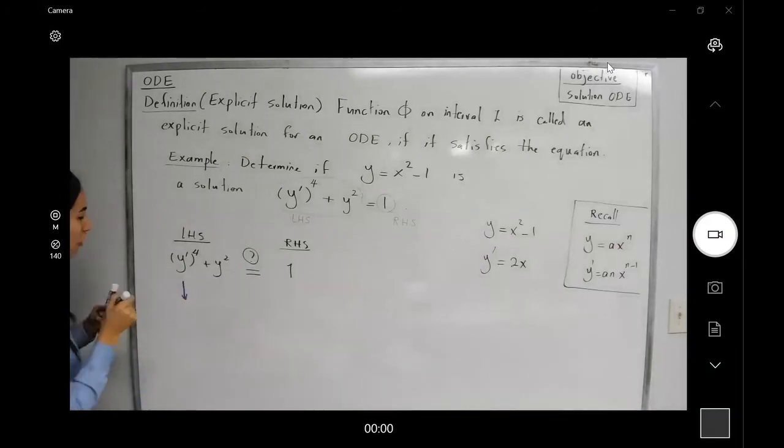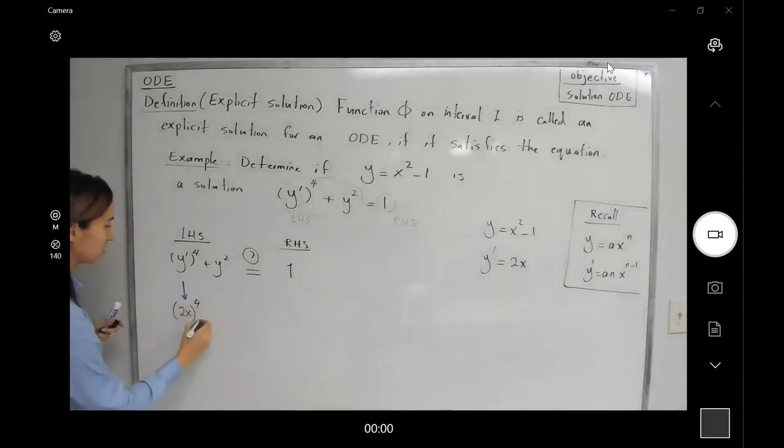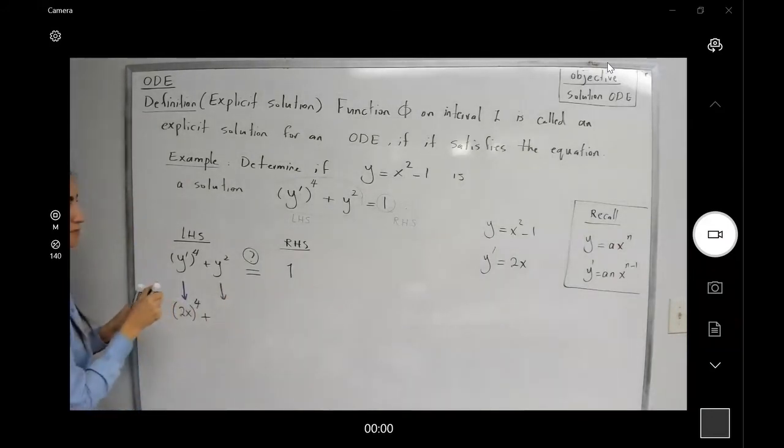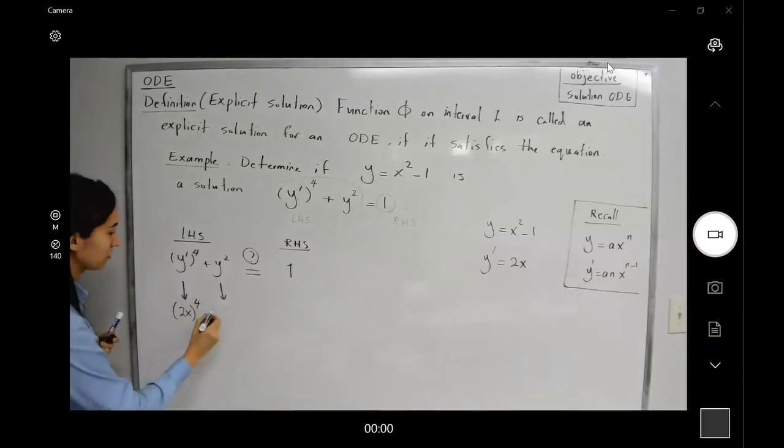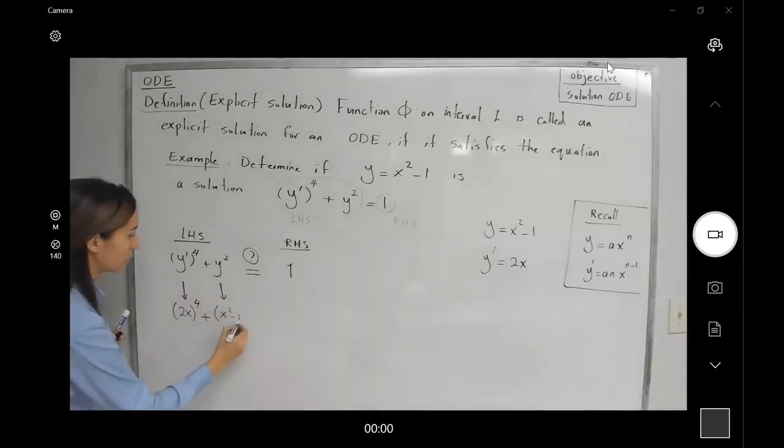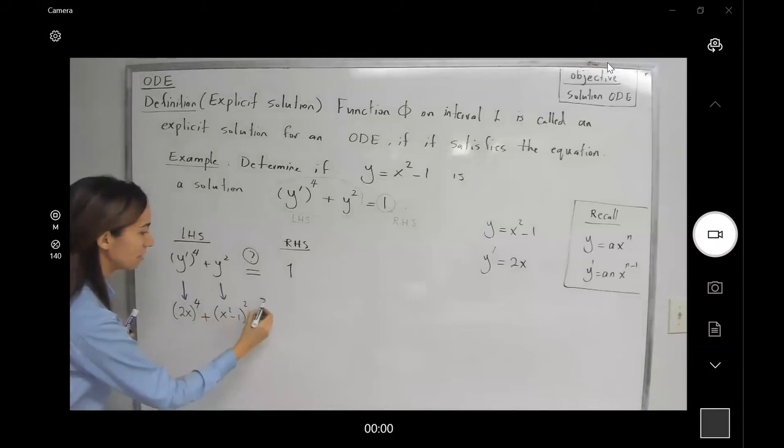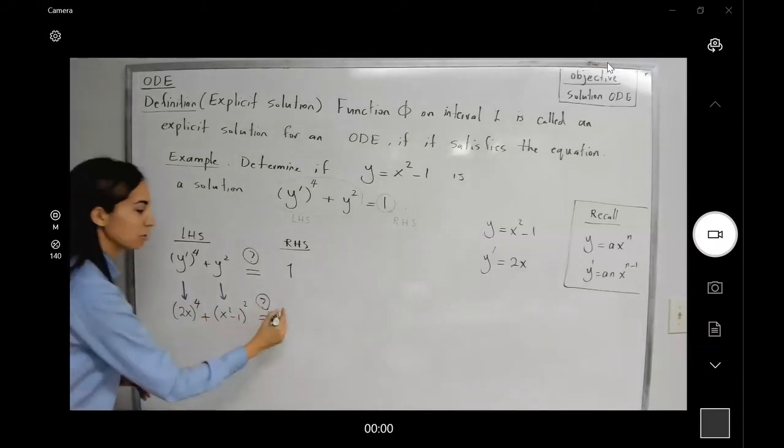(2x)⁴ + y². What is y? It's x² - 1. Let's substitute this here: (x² - 1)². Is this, after simplification, equal to 1?